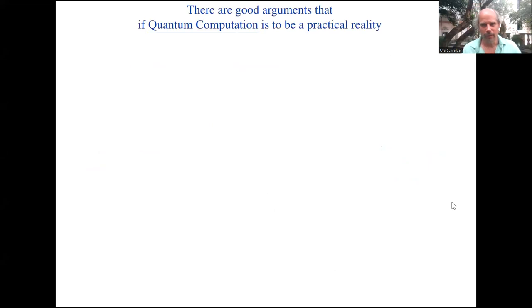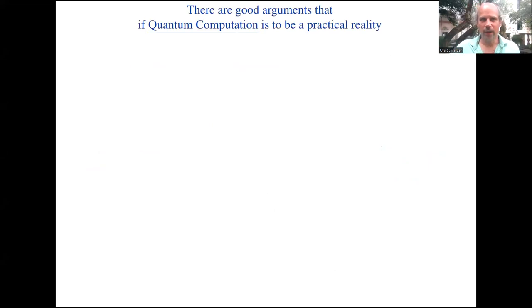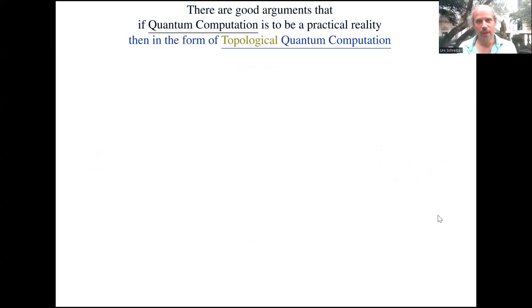Let me try to share my screen so that you see what I'm seeing. Let me recall, you all know this, but just for emphasis, there are good arguments that if quantum computation is ever to be a practical reality, practically useful robust computing, then it has to be in the form of topological quantum computation.